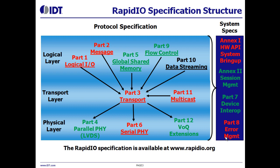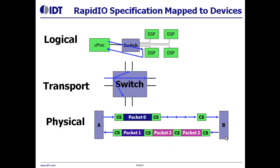The RapidIO specification is available in its entirety from www.rapidio.org — there is no charge. The RapidIO ecosystem consists of two kinds of devices: endpoints and switches. Endpoints are devices that originate and process packets, while switches route packets to endpoints. The logical layer specification largely applies to endpoints, and the transport layer maps largely to RapidIO switch devices. The physical layer specification applies to every RapidIO link.